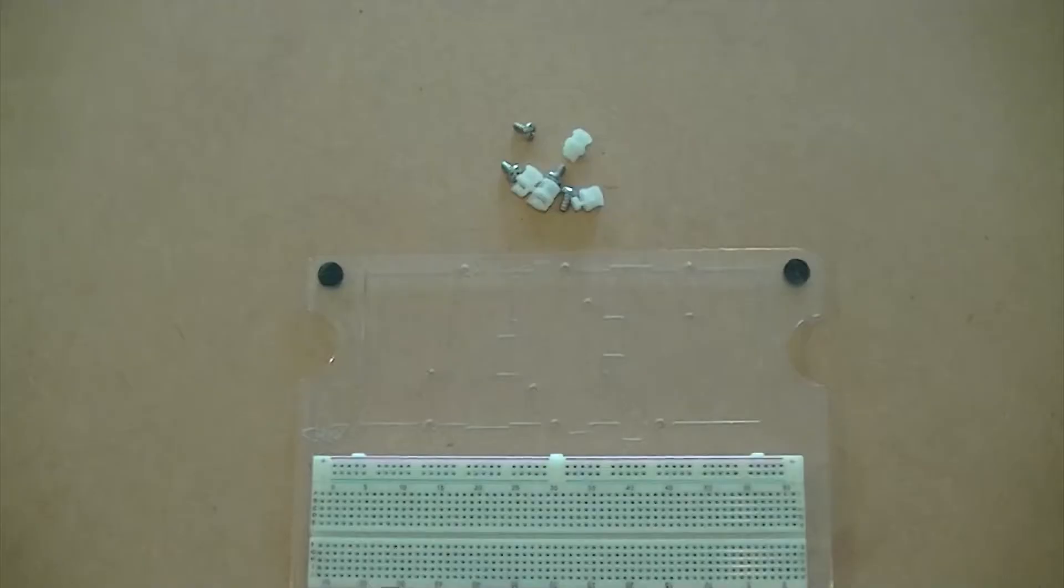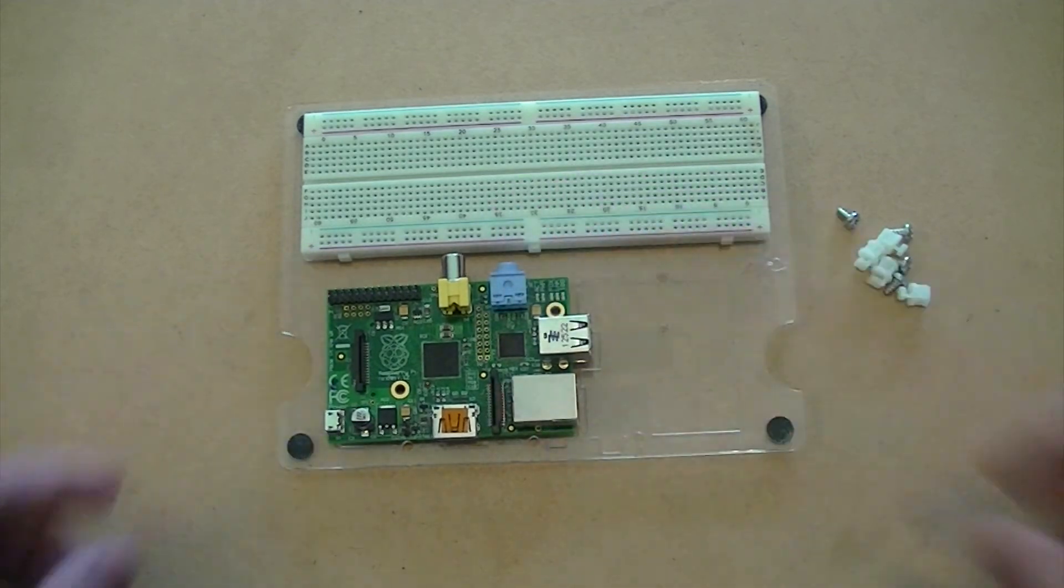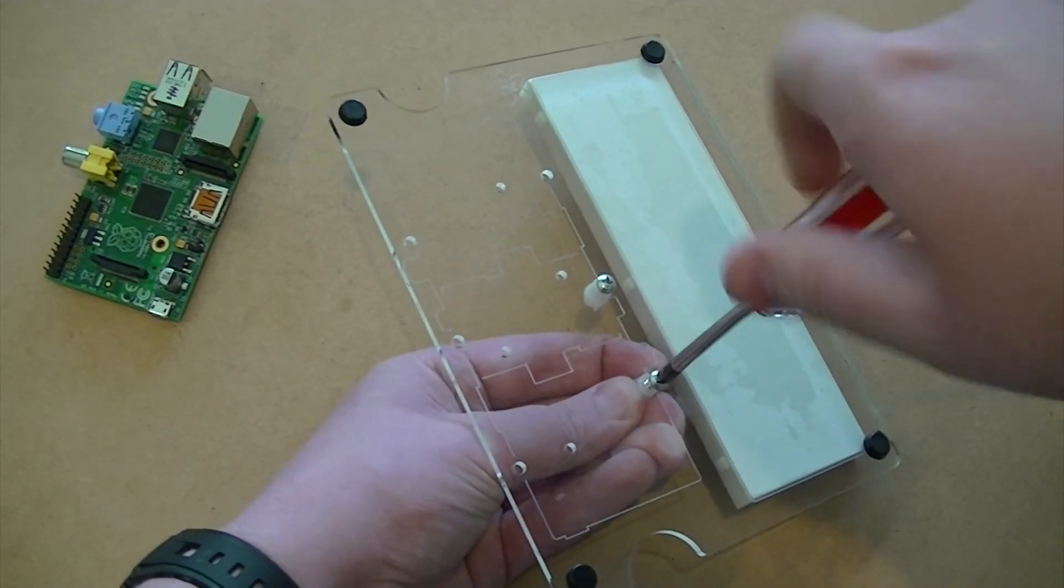We can then use our four plastic standoffs and screws to secure the Raspberry Pi to the board. Begin by fastening and placing the two plastic standoffs which are closest to the breadboard.